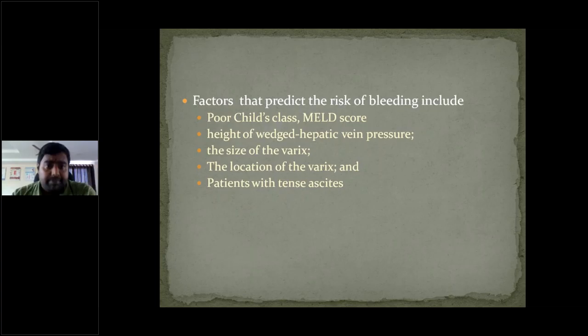If the patient has tense ascites, they cannot breathe in the supine position and must sit at an inclined position of 45 degrees or at 90 degrees. In the supine position, the ascites compresses the diaphragm causing breathing difficulties. Tense ascites also increases the risk of bleeding.